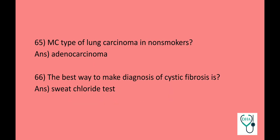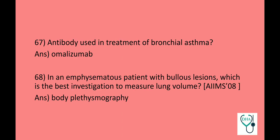Most common type of lung carcinoma in non-smokers: adenocarcinoma. The best way to make a diagnosis of cystic fibrosis: sweat chloride test. Antibody used in treatment of bronchial asthma: omalizumab. In an emphysematous patient with a bullous lesion, the best investigation to measure lung volume is body plethysmography — this is a previous AIIMS question.